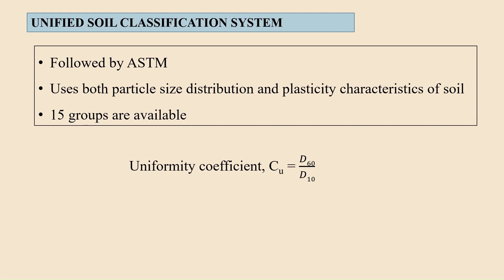In the unified soil classification system, we use two parameters especially in classifying coarse-grained soils. The first one is Cu. Cu is calculated using Cu = D60 / D10. D60 means 60% of particles are smaller than this size, and D10 indicates 10% of the particle sizes are smaller than this diameter. We have another notation called coefficient of curvature, indicated as Cc, and Cc is given by D30² / (D60 × D10). D30 stands for 30% of particles are smaller than this diameter.